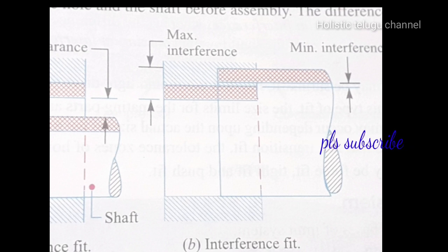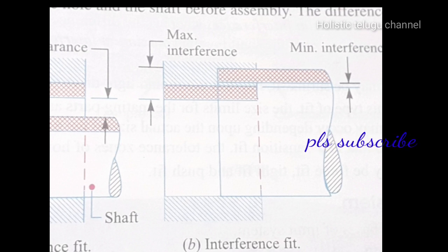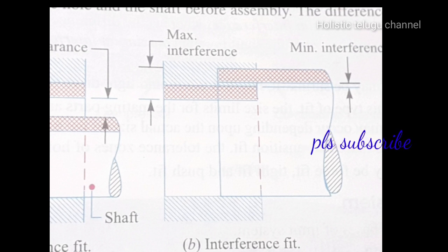The difference between the maximum size of the hole and the maximum size of the shaft is called maximum interference. Examples of interference fit include shrink fit, heavy drive fit, and light drive fit. This is the interference fit.